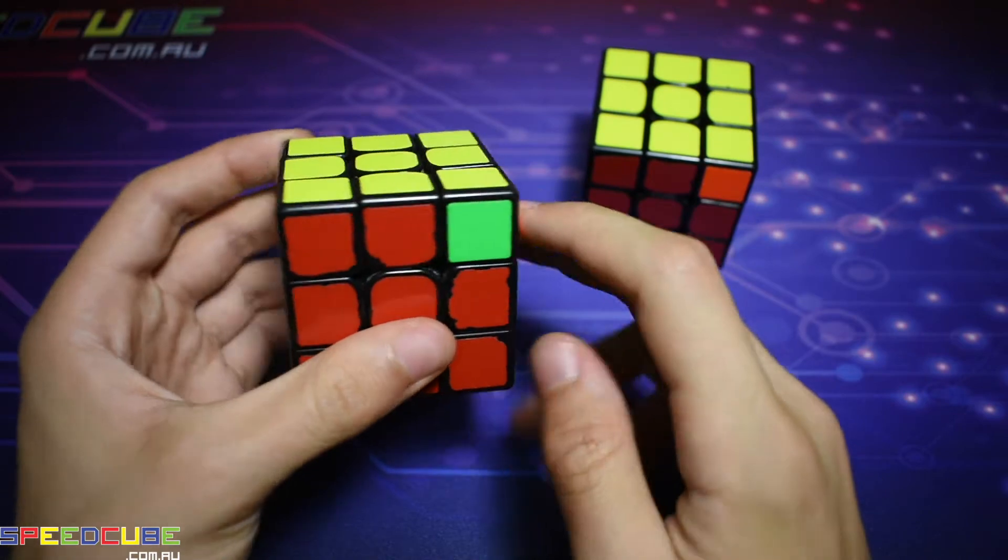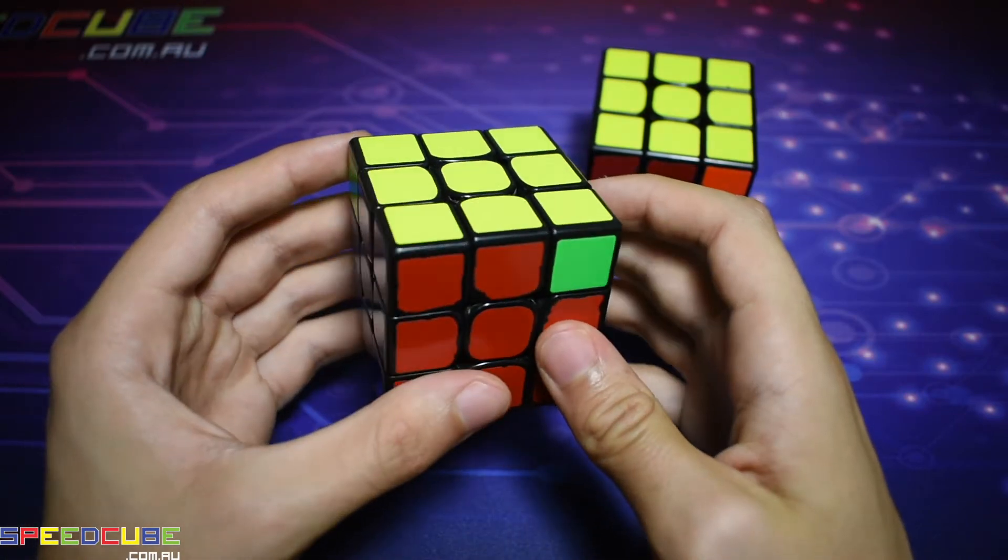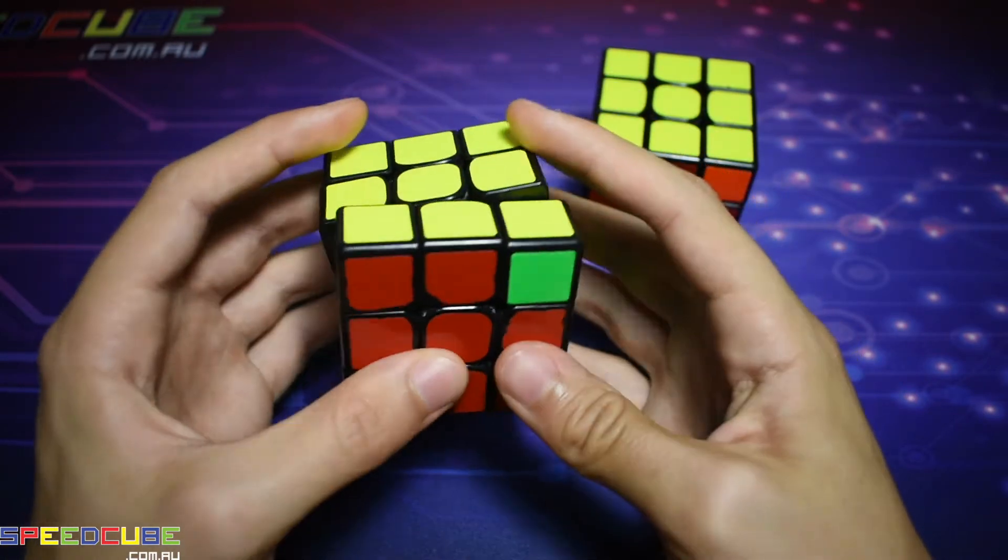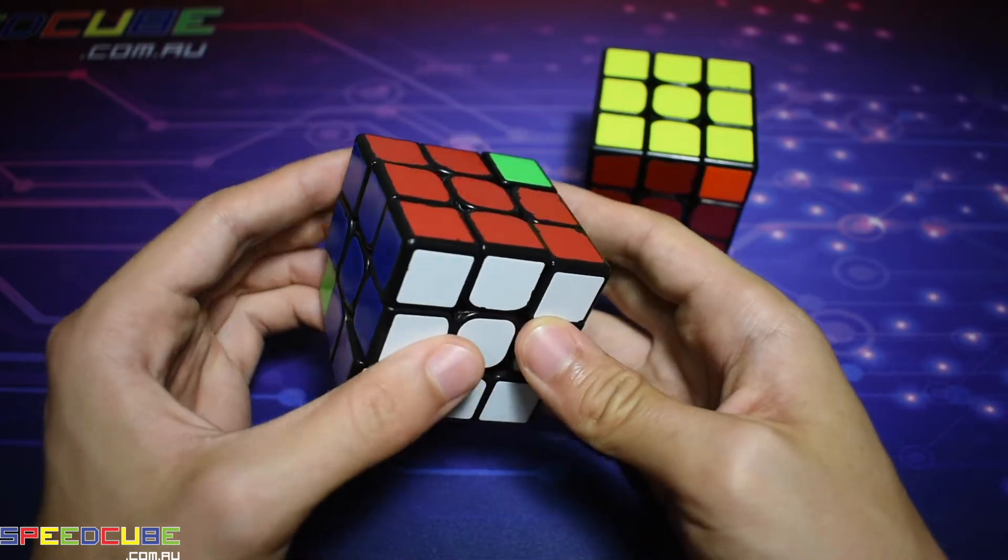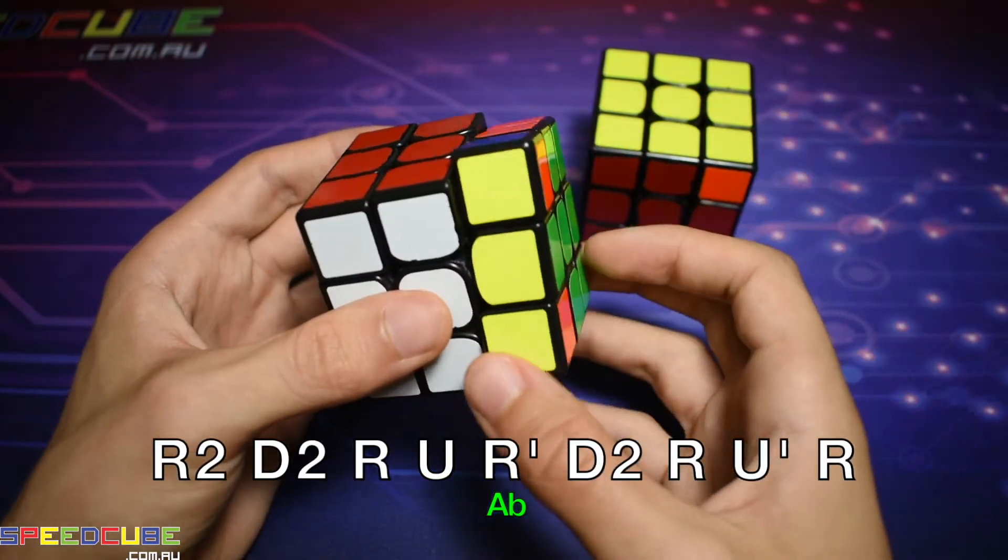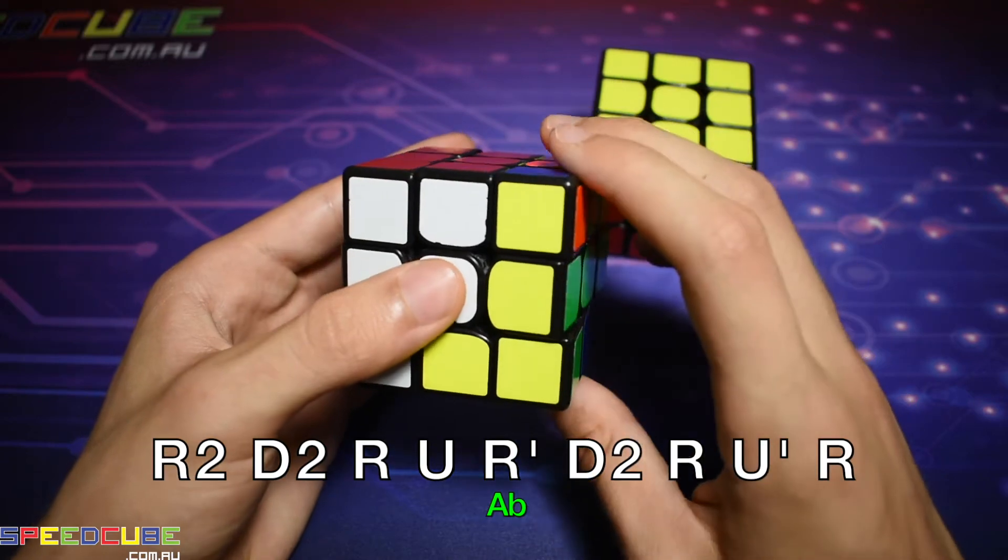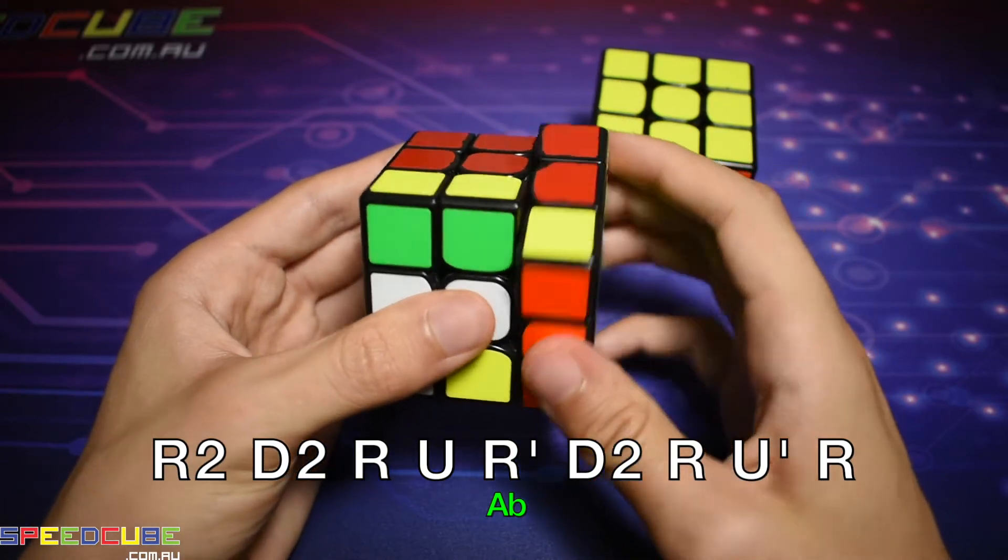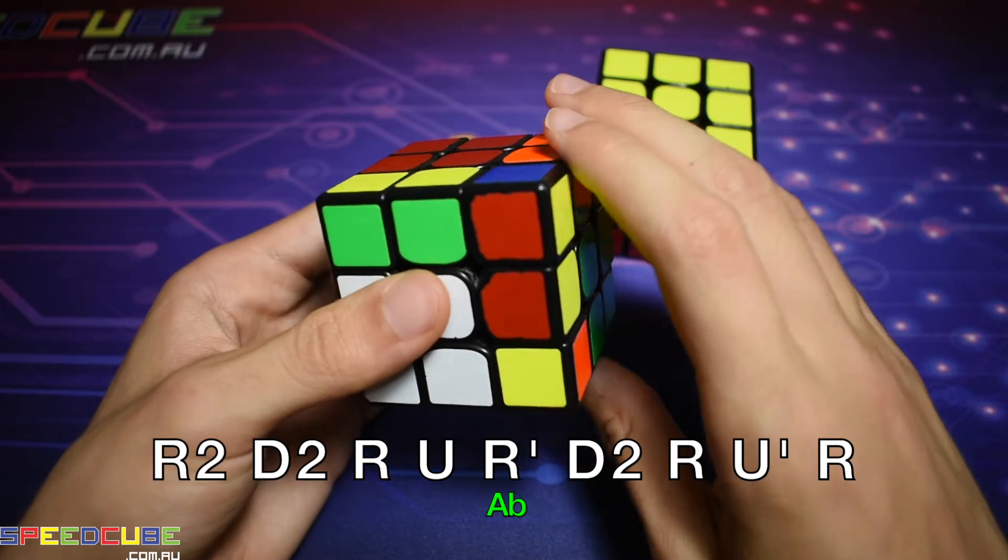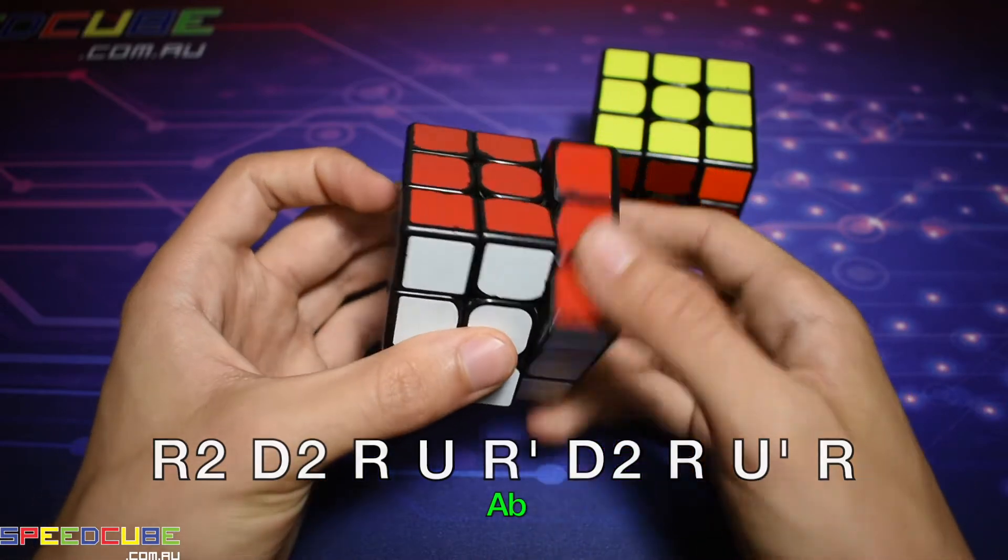Holding the bar on the right perform this algorithm from down here. So you want to come down first and do this. Right to, down to, right, up, right inverted, down to, right, up inverted, right.